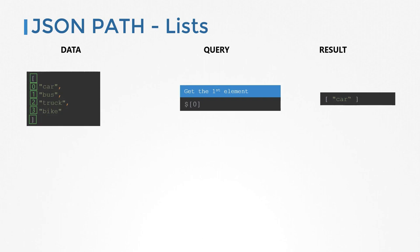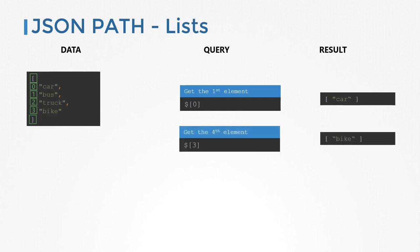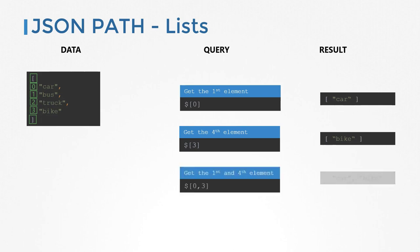Always remember to start with the dollar symbol for the root element. To get the first element in my list, I say $[0]. To get the fourth element, I would say $[3]. If I want the first and the fourth element, I could do $[0,3] within the square brackets.